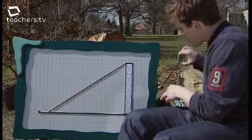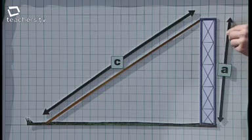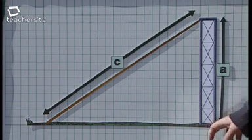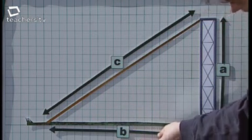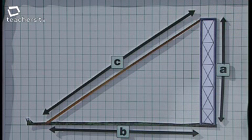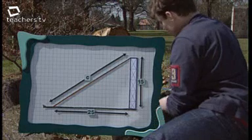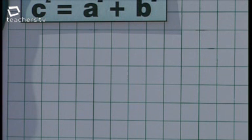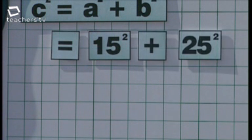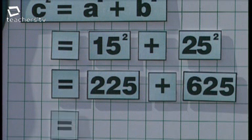Here's the hypotenuse, so we're going to label that C. The height of the tower is A, and the distance from the tower to the anchor point shall be known as B. We already know that the height of the tower is 15 metres and the anchor point to the tower is a distance of 25 metres. Using our formula, C squared equals 15 squared plus 25 squared, which equals 225 plus 625, and that equals 850.